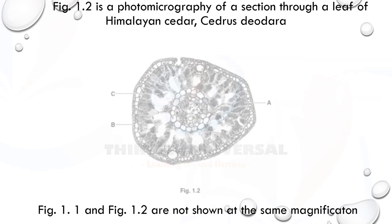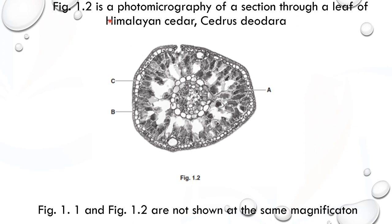Let's go to the next question. Fig 1.2 is a photomicrograph of a section through a leaf of Himalayan cedar — Cedrus deodara. You can check how many layers it has. It has two epidermis layers: one is the epidermis, and the second layer beneath it is the hypodermis.